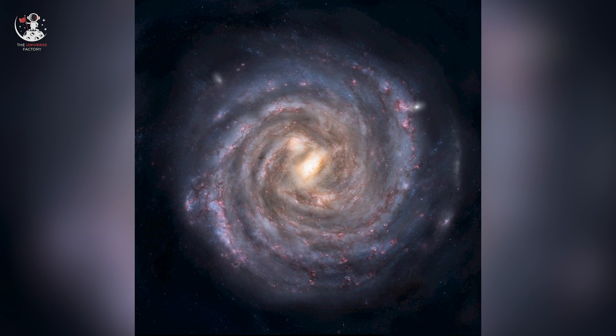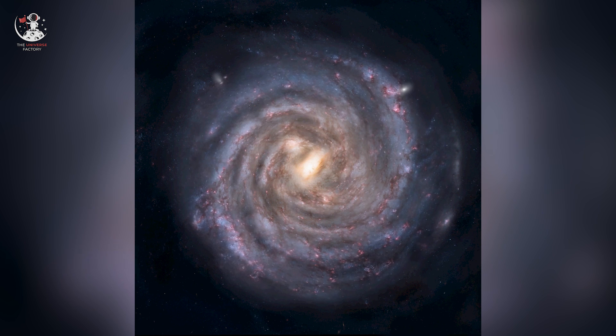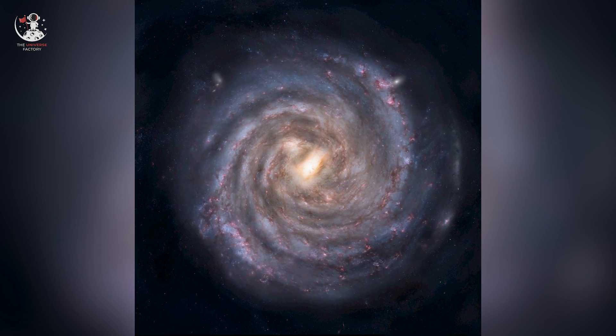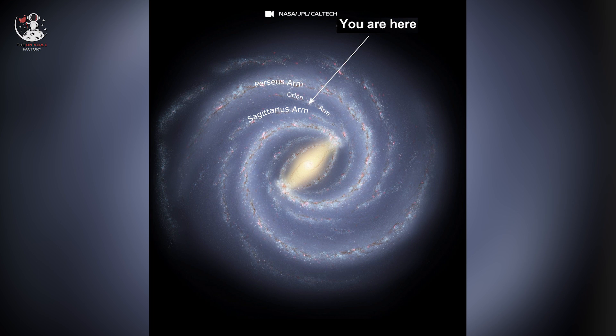According to estimates, there are nearly 100 to 400 billion stars in our galaxy. Sun is just one of them. Here in this image you can see the location of our solar system with reference to the entire galaxy.